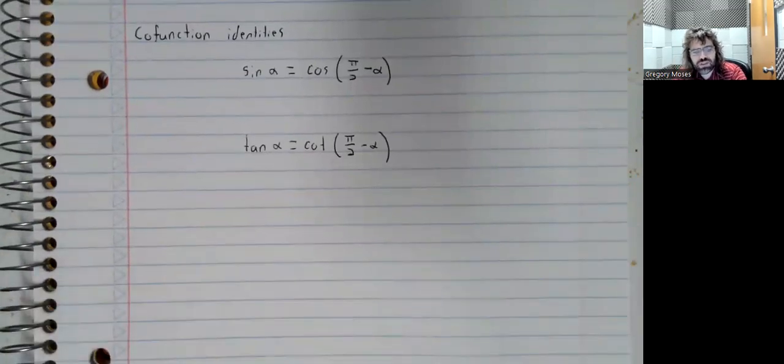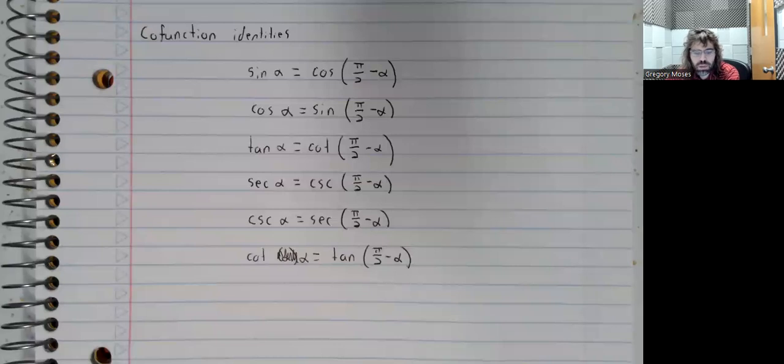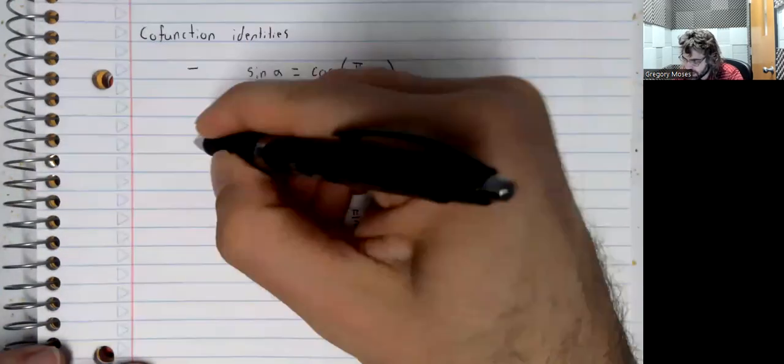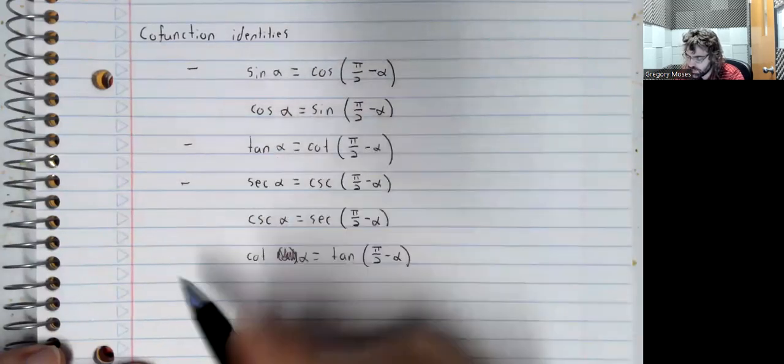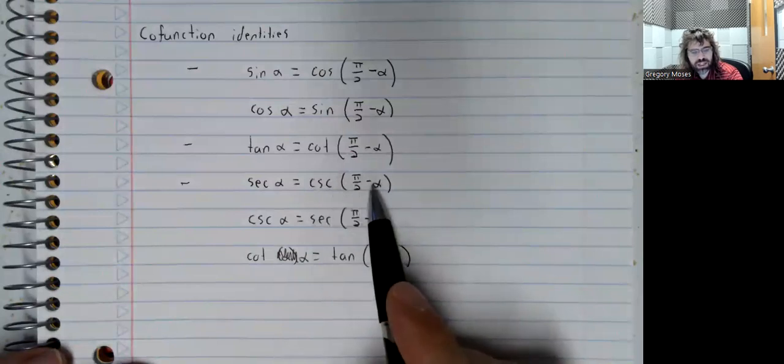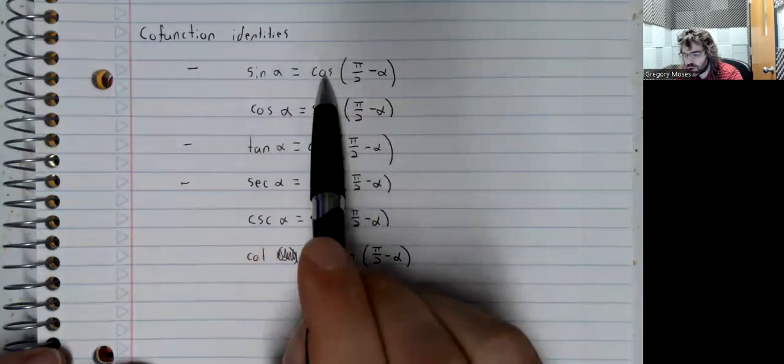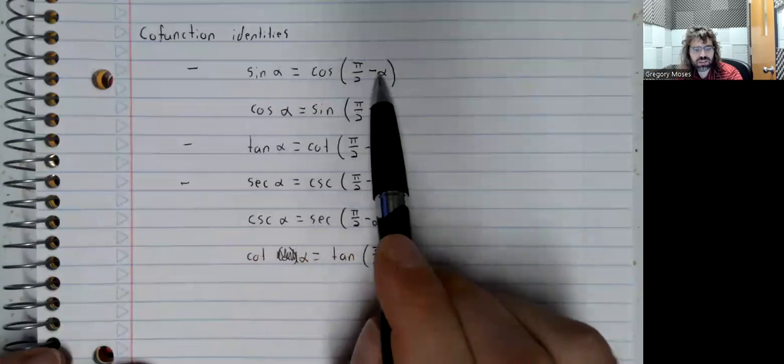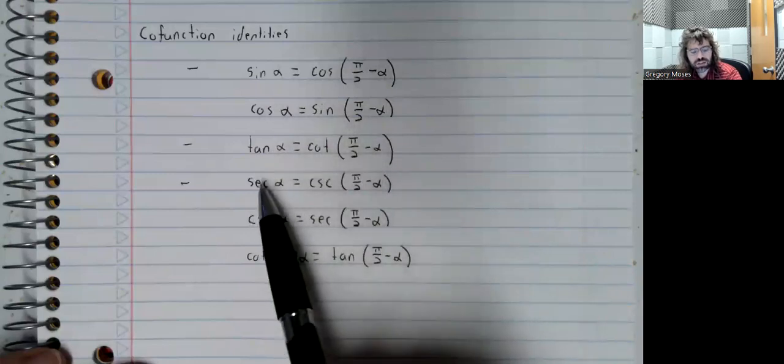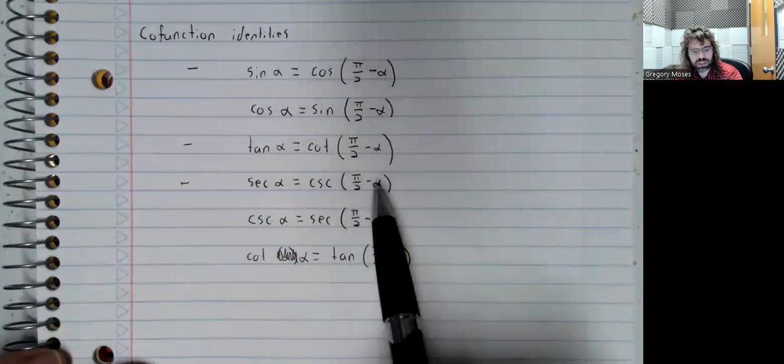And I'm now going to pause this video and fill this list in. There are six of them, but hopefully learning these won't be so bad, because they're all following the same pattern. The non-co-functions, the sine and the tangent and the secant, are equal to the co-function of pi over 2 minus the angle. So the sine of alpha is the cosine of pi over 2 minus alpha. The tangent is the cotangent, pi over 2 minus alpha. The secant is the cosecant, pi over 2 minus alpha.